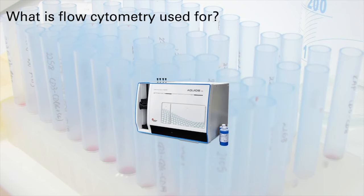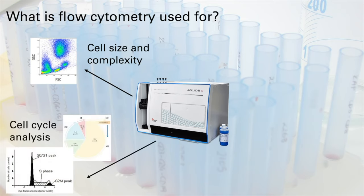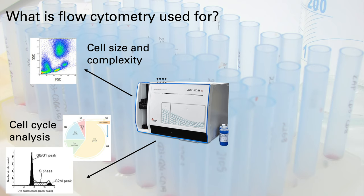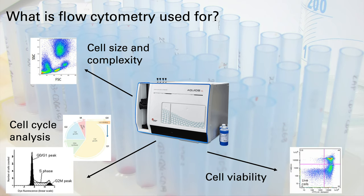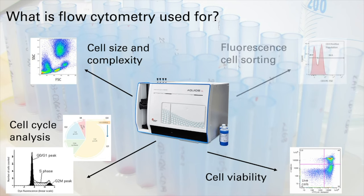If flow cytometry allows us to look at the properties of cells, what sort of things can we determine? At its most basic level we can gain information about the size and complexity or granularity of cells. By adding dyes to the sample we can determine what stage of the cell cycle individual cells are at or their viability, whether they are alive, apoptotic or dead. Using fluorescence we can determine what cells are present in a mixture, look at changes to the expression levels of different cells or components of cells and even sort those cells to purify individual populations with a specific combination of markers or a specific phenotype.